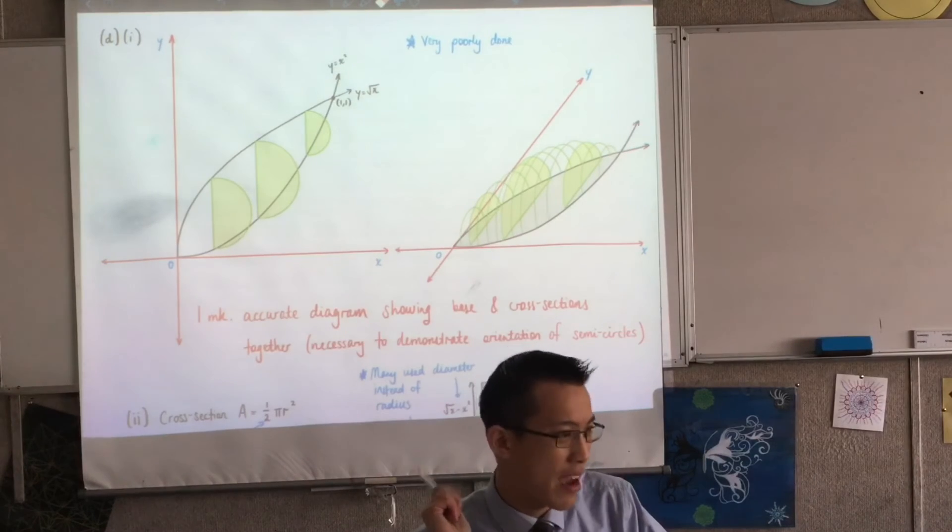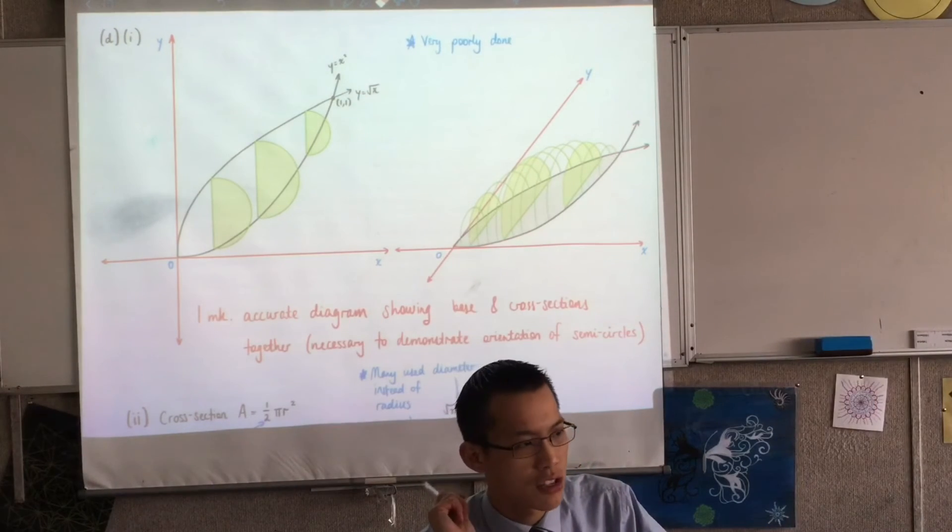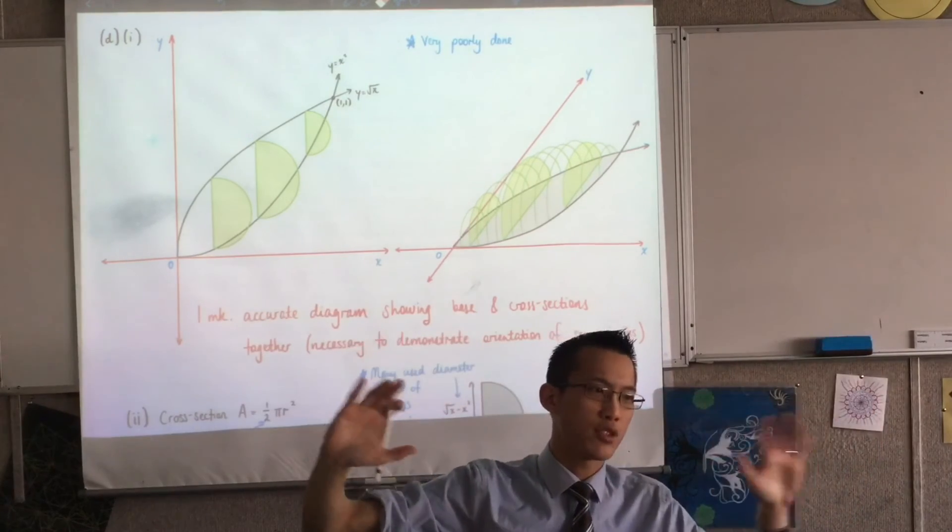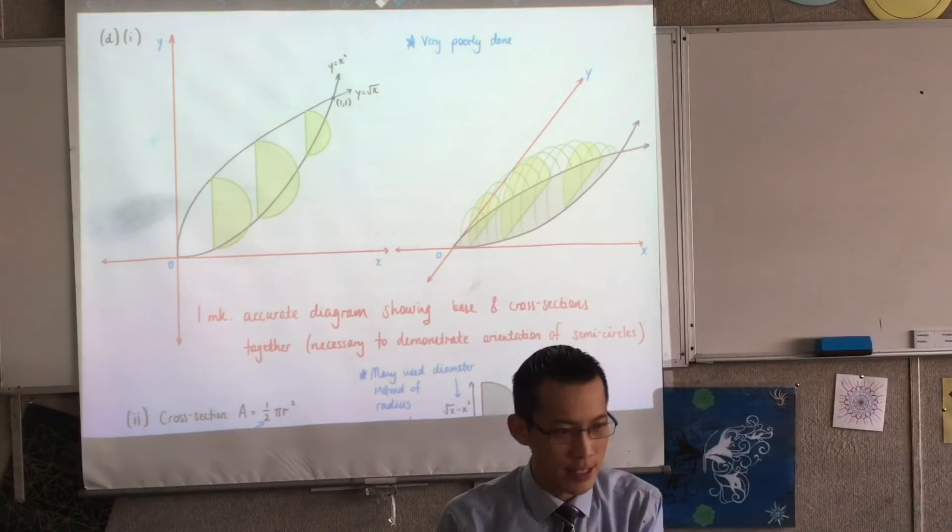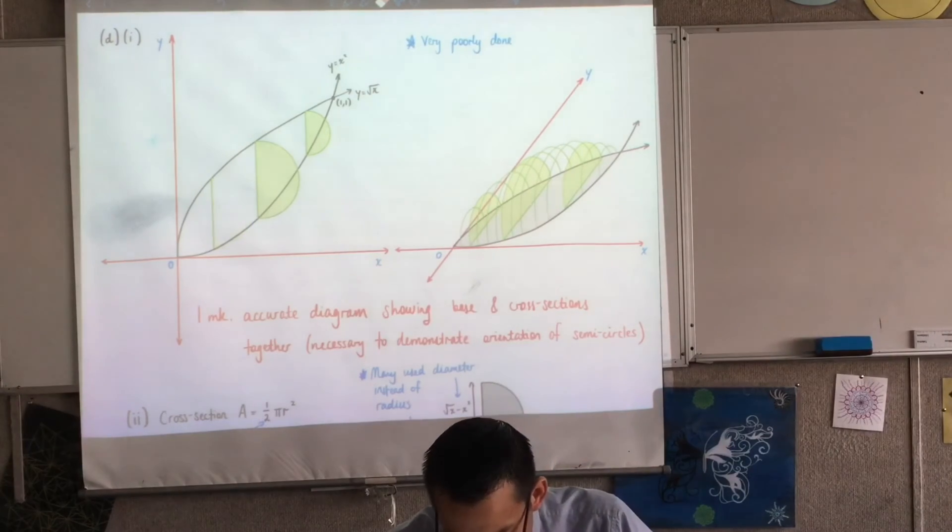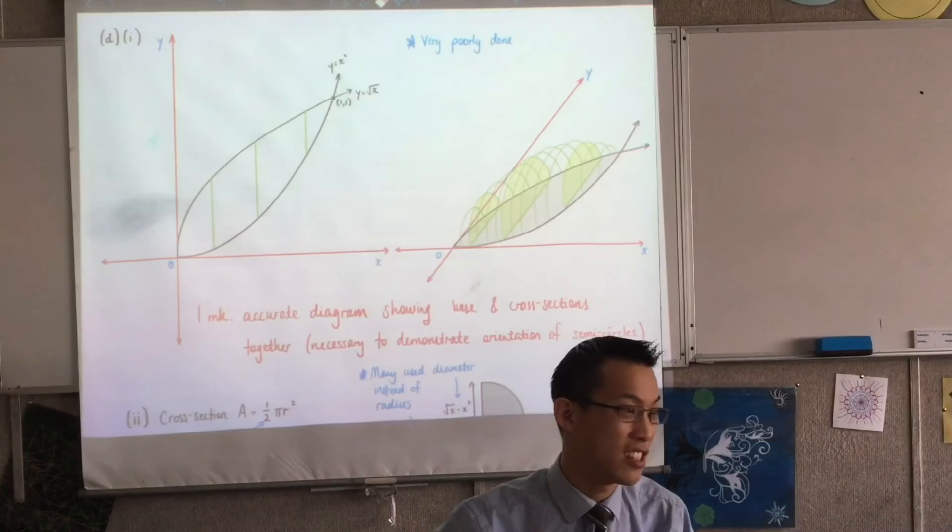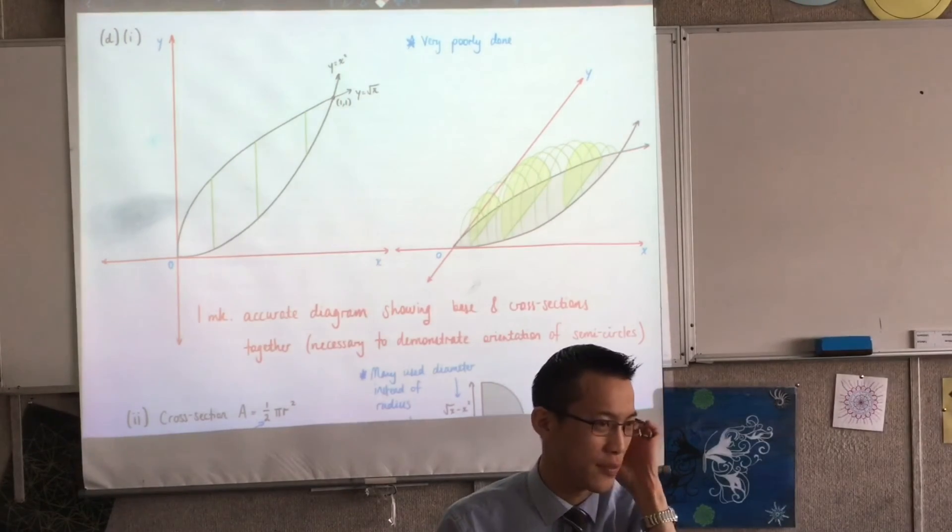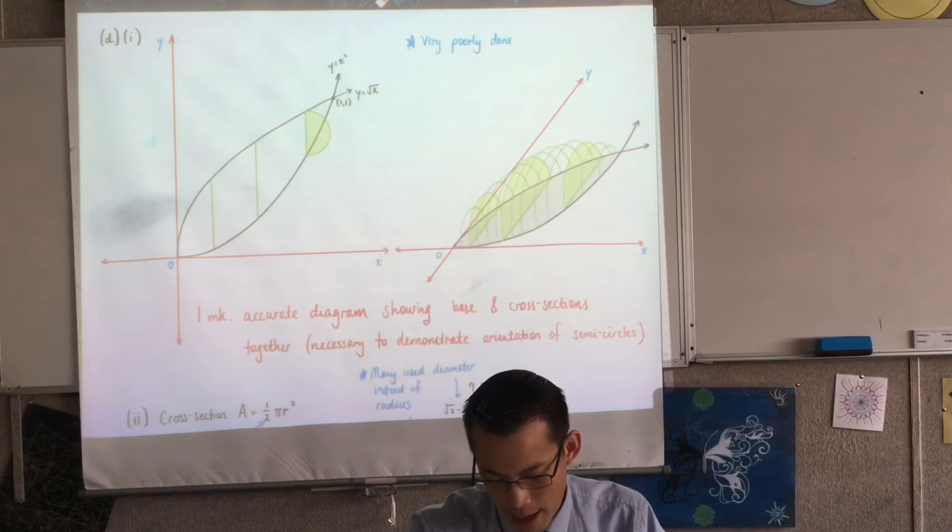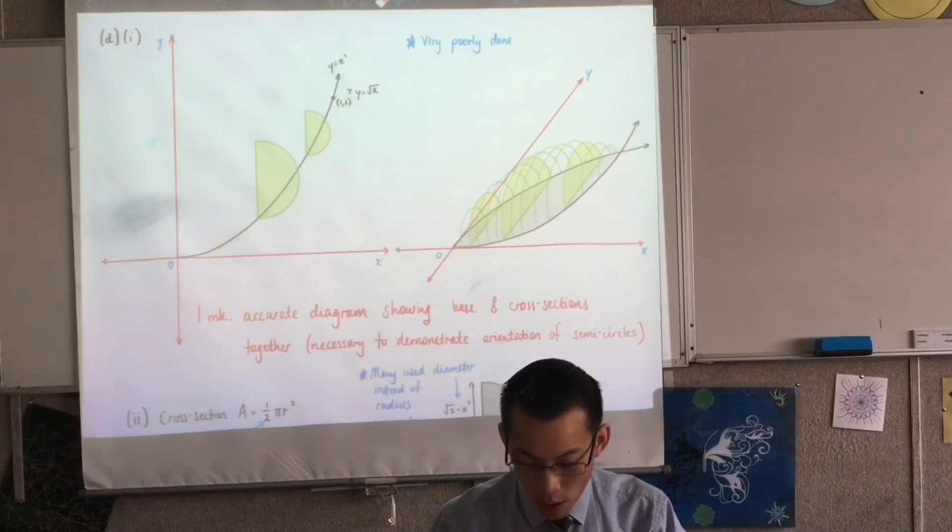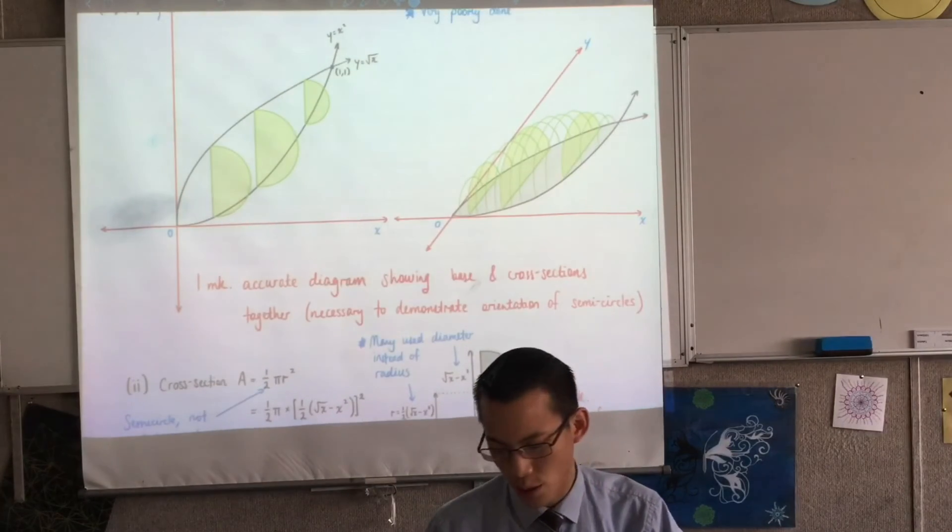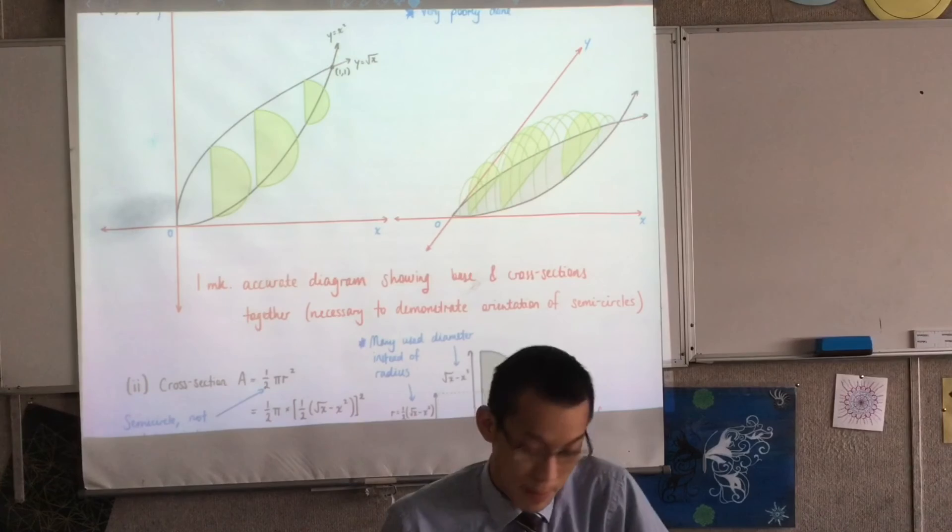So the semi-circle idea was kind of like a curveball to see if you recognize that. When you have a look, what I was trying to see was, have you oriented the cross-sections correctly? And if you drew the cross-sections separate to your diagram, I couldn't see that you understood that. Now, some of you tried to get something like this, and then you did your cross-section elsewhere. It wasn't really sufficient because I need to see them related to each other.